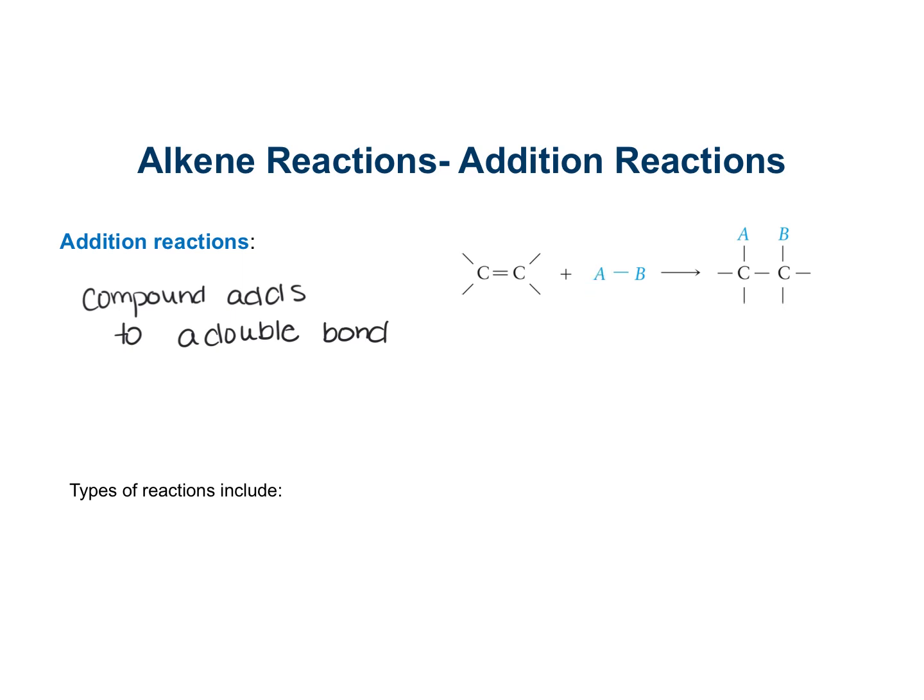What happens here is we have this compound — it's going to add across this double bond until the double bond becomes a single bond, and then on each carbon one of these groups is now attached. These are called addition reactions because the substance is added to that double bond, and they are characterized by reactants that combine generally to form one product. We have two reactants here and we form one product.